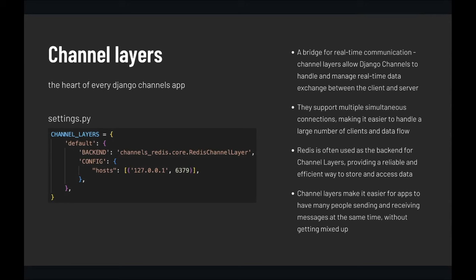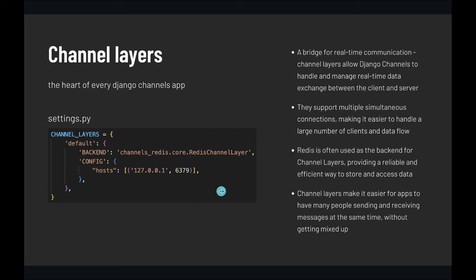Channel layers are the heart of every Django Channels application. They allow Django Channels to handle and manage real-time data exchange between client and server, supporting multiple simultaneous connections. Redis is usually the backend for channel layers — it provides a reliable and efficient way to store and access data. In settings.py we need to specify the backend and define where the Redis server is located and on which port it is running.